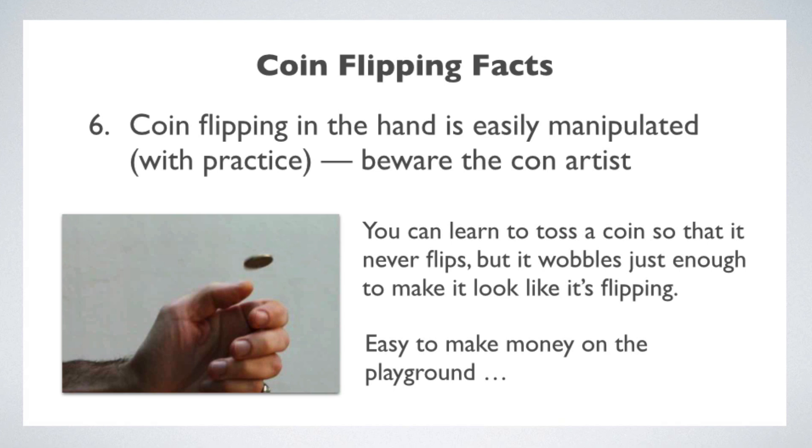With this skill, you can win bets, even if you let other people call the toss in the air. If the coin starts heads and you call heads, then I catch it in the same hand and reveal heads. If you call tails when it's in the air, I catch it, turn it over on the back of my other hand and reveal the tails.